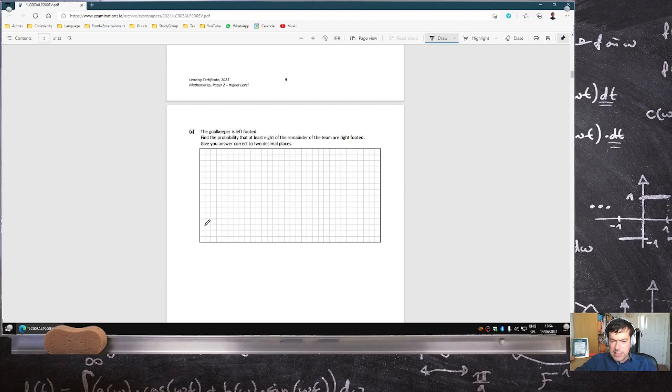The goalkeeper is left-footed. Find the probability that at least eight of the remaining team are right-footed. So the goalkeeper is left-footed. Find the probability that at least eight of the remaining team are right-footed. So that would be eight, nine, ten are right-footed.